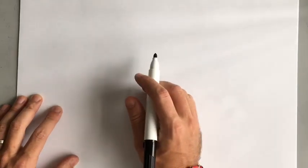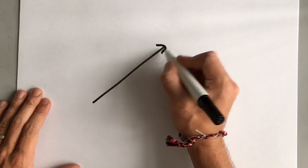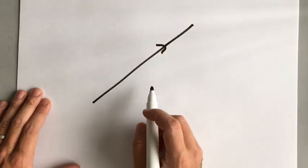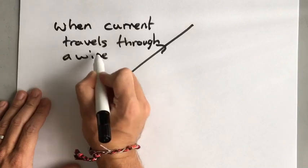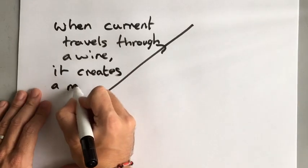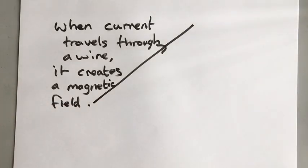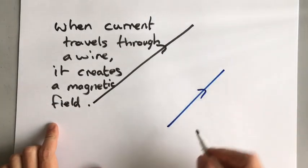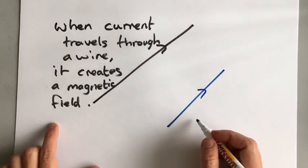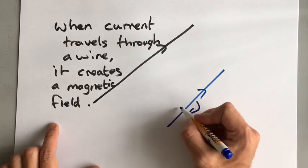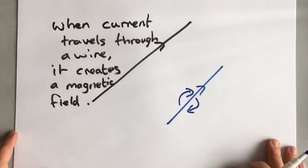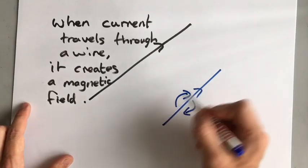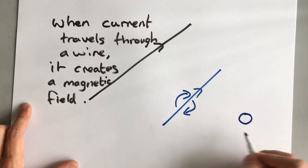The first thing you need to know is that when current travels through a wire, it creates a magnetic field around that wire. So if we have a wire running into the page, that's going to create a magnetic field around the wire — the field is going around. Now that's very difficult to draw on paper, so instead of drawing it in three dimensions, we draw a cross section of a wire.